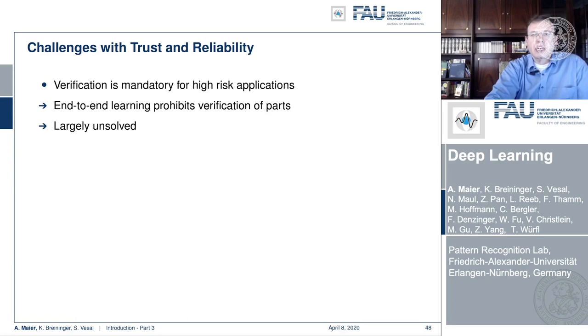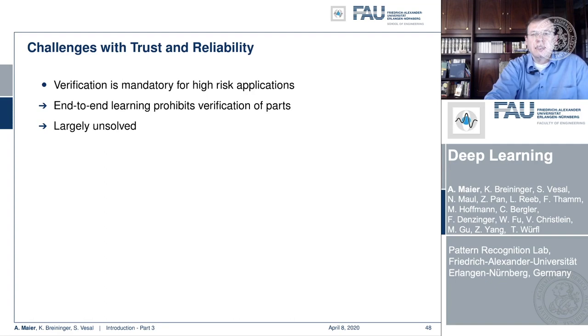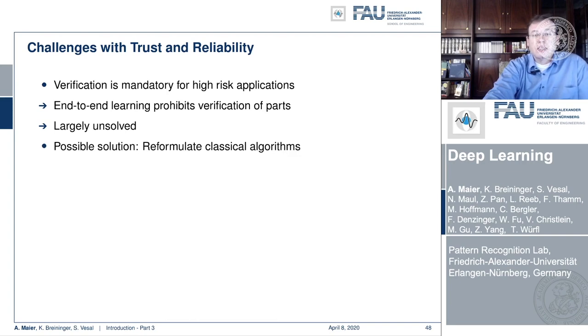There are also challenges with trust and reliability. Verification is mandatory for high-risk applications, and regulators can be very strict — they really want to understand what's happening in those high-risk systems. Regulators pay a disproportionate amount of attention to that which generates press, and Tesla generates a lot of press. End-to-end learning essentially prohibits identifying how the individual parts work, making it very hard for regulators to tell what part does what. We must admit this is largely unsolved — it's difficult to tell which part of the network is doing what. Modular approaches based on classical algorithms may be one way to solve these problems.